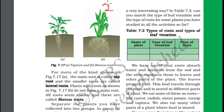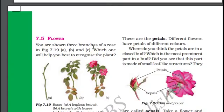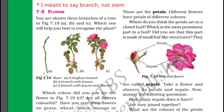In the second type of plant there will not be a main root. Instead there will be many roots and all roots seem similar. This type of root system is called fibrous roots.